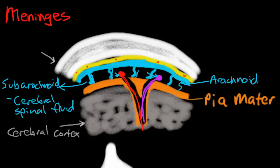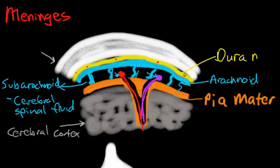The very outermost layer, fused directly to the arachnoid and also fused directly to the periosteum of the skull, is the dura mater. That is the very outer layer.